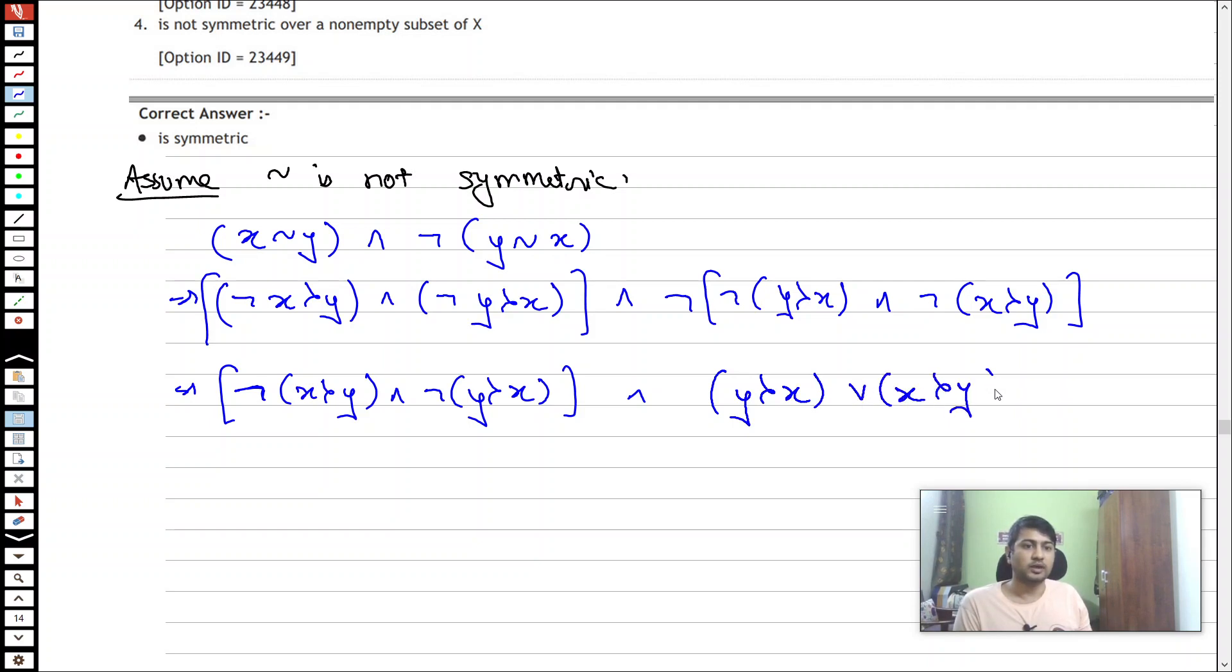But we have y preferred to x or x preferred to y. So one of these things, one of these things have to be true.